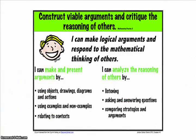Number three: construct viable arguments and critique the reasoning of others. Mathematically proficient students understand and use stated assumptions, definitions, and previously established results in constructing arguments. They make conjectures and build a logical progression of statements to explore the truth of their conjectures. They are able to analyze situations by breaking them into cases and can recognize and use counterexamples. They justify their conclusions, communicate them to others, and respond to the arguments of others. They reason inductively about data, making plausible arguments to take into account the context from which the data arose.